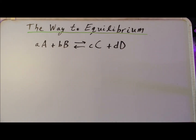We can define a state called equilibrium where, for this generic reaction, the rate going from left to right — often called the forward rate — is equal to the rate going from right to left, often called the reverse rate. When these two rates are equal to each other, then we are at equilibrium.